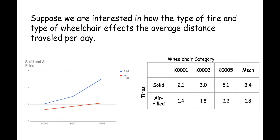For example, let's return to the study of distance traveled based on category of wheelchair and type of tire. If the paper reports a main effect for tires, then one kind of tire is better regardless of the type of wheelchair. We can combine all the wheelchairs that use solid tires and compare them to all the wheelchairs that used air-filled tires.